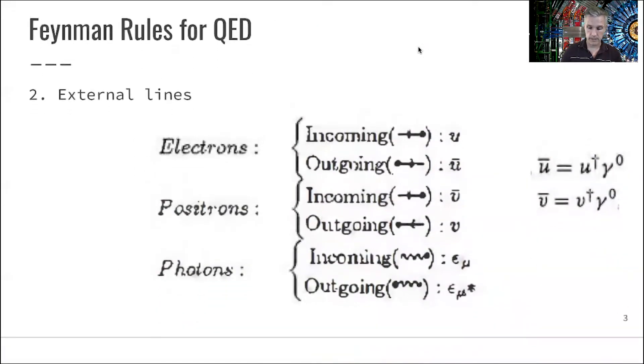Here comes the difference. Our external lines are either electrons, positrons, or photons—charged fermions and photons. We discussed how those solutions look like: our spinors U and V.